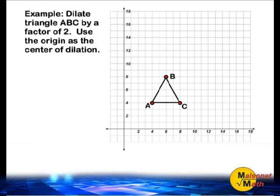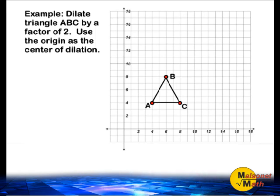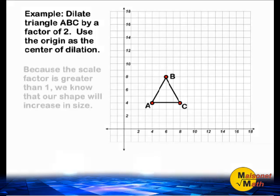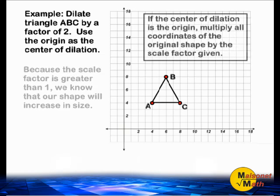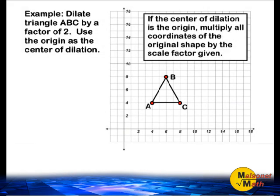The first example of dilation we are going to demonstrate today is when the center of dilation is the origin. We are going to dilate triangle ABC by a scale factor of 2. Because the scale factor given is greater than 1, we automatically know that our shape will increase in its size. If the center of dilation is the origin, simply multiply all the coordinates of the original shape by the scale factor given.